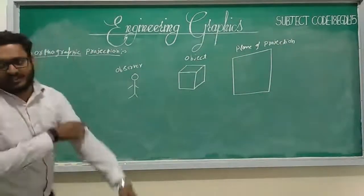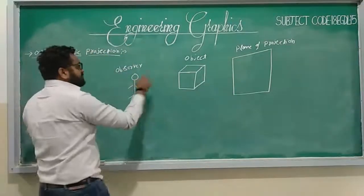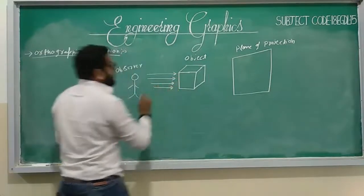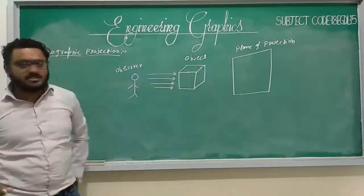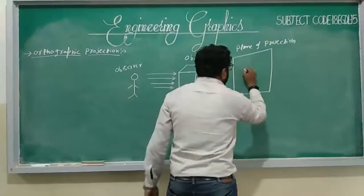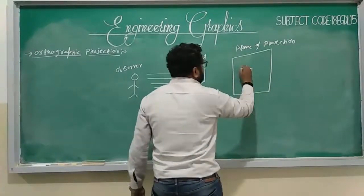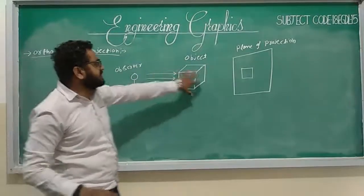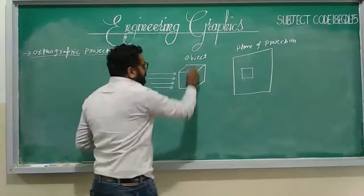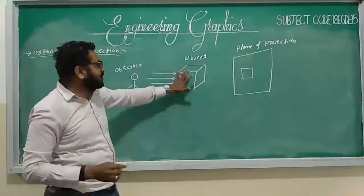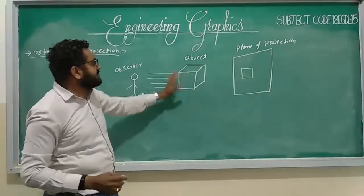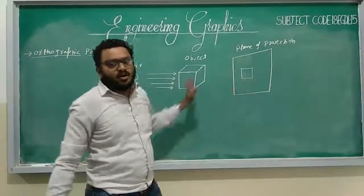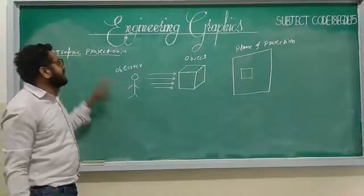The observer, object, and plane of projection should all be kept in line, and the observer sees the object. The projection lines should always be parallel and perpendicular to the objects, and the shadow will fall on the plane of projection. We need to see the object in different views — front view, top view, and side view — and draw the projections on the plane of projection to get all the information. This is how orthographic projection works.